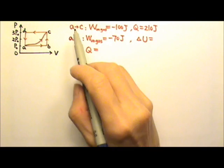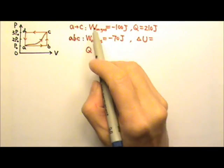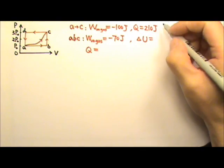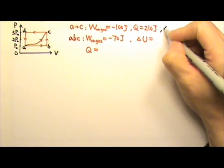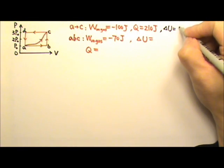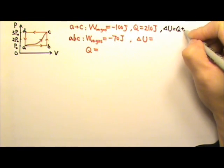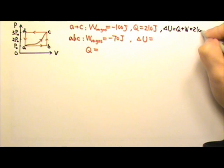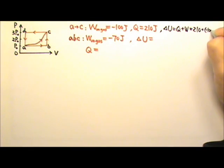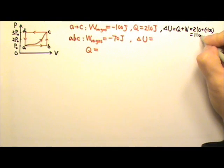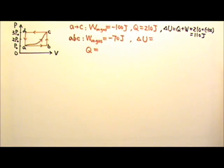For the curvy path A to C, we know W and we know Q. That means we can find the delta U, which is Q plus W. So that will be 210 plus negative 100, and this gives us 110 joules.